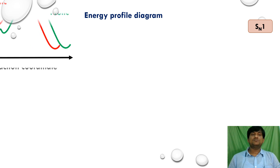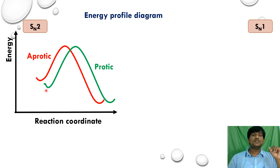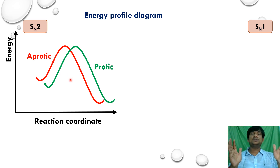Let us take the energy profile diagram. For SN2, comparing the diagram in aprotic versus protic solvents: in the presence of a protic solvent, the reagent (nucleophile) has lower energy because it is stabilized by solvation. This raises the activation energy for the SN2 reaction compared to an aprotic solvent, so the rate of SN2 reaction decreases in protic solvents.